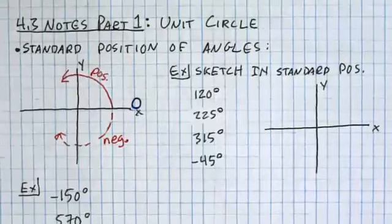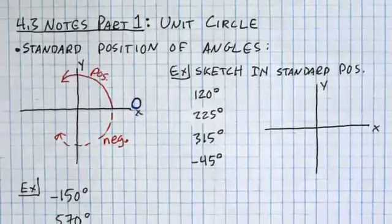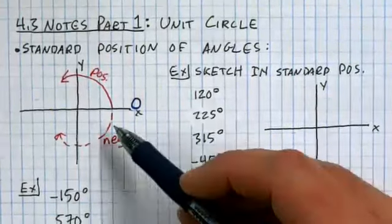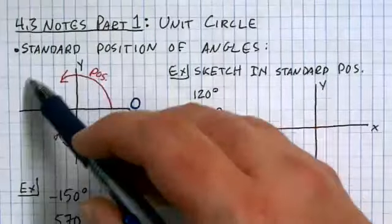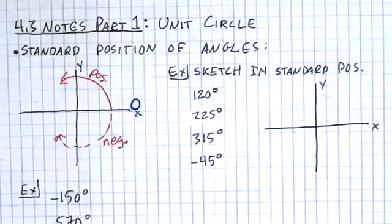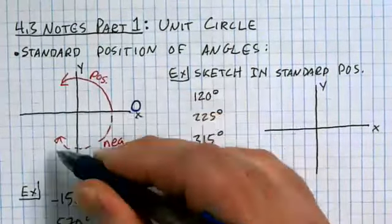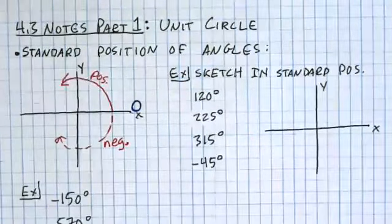If you're going to make an angle that's a positive angle, it should rotate in the counterclockwise direction towards the y-axis initially. Negative angles rotate in the clockwise direction. Have you guys seen this before?